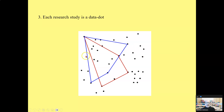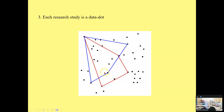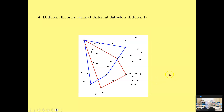You can have a bottom-up theory of reading and an interactive theory of reading, and both can be said to be research-based because they connect different data dots differently. And sometimes they connect some of the same data dots. However, different theories connect different data differently.